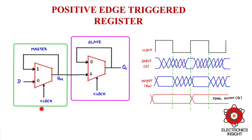During this period, the master will be in its transparent mode because input D is copied to the output QM. Now for the slave stage, which is implemented using a positive latch, when clock is 0, input 0 of the multiplexer is selected. At this time, when the clock signal is low, the input data is held stable at the output for the entire period, so the slave stage is said to be in hold mode.